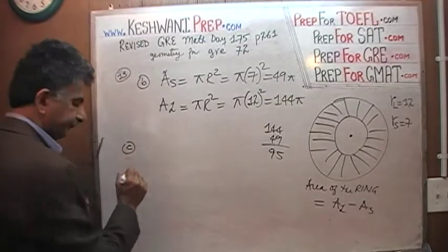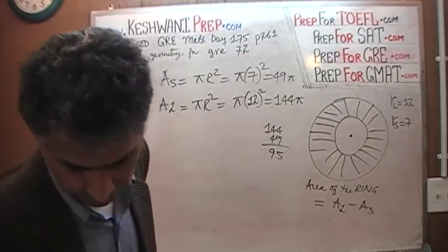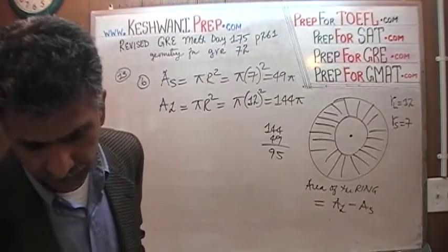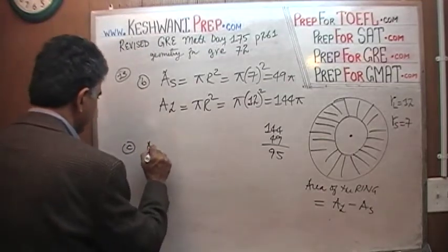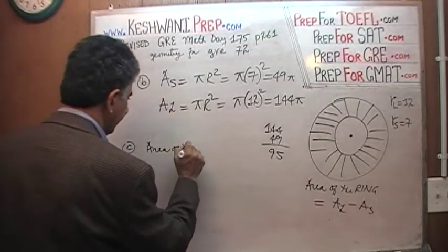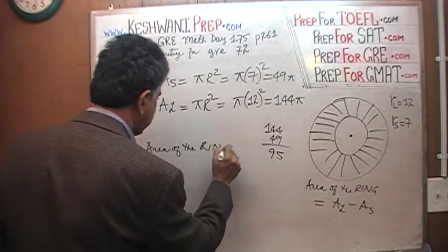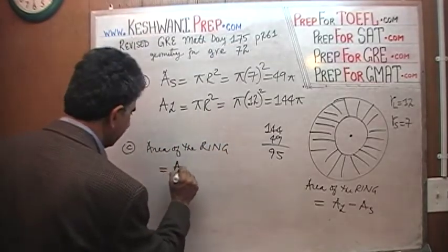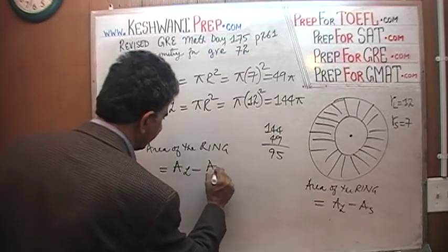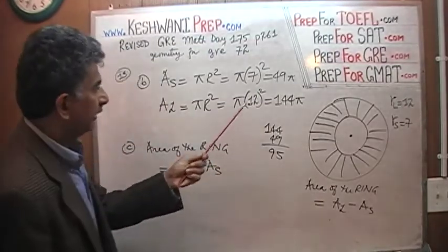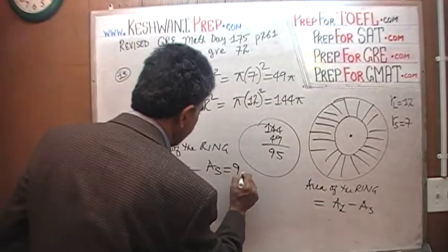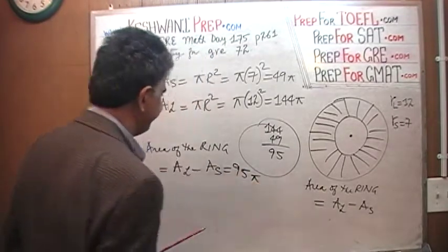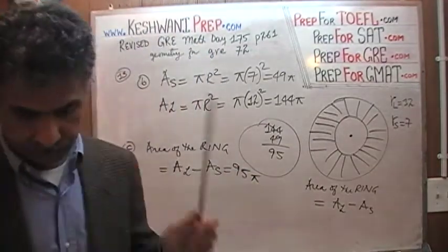Therefore the part C, how do they phrase it? They don't call it ring. What do they call it? They say area of the shaded region which I am calling ring. Area of the ring is equal to the area of the large guy minus the area of the small guy. Area of the large, we just did that. It is 95π equals 95π. That is it. That is all it is. We are done.